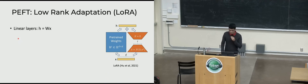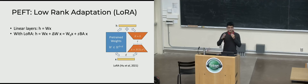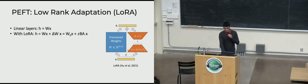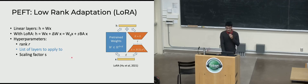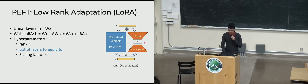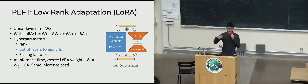LoRA's basic equations: instead of a typical linear layer, you add a parallel branch with a low-rank decomposition of the weight delta — two trainable matrices. The key knobs are the rank and the list of layers you apply this to. The most important factor turns out to be which layers you apply LoRA to, not the rank itself. A scaling factor is also present but doesn't do much in practice. At inference time, you can merge the weights by adding the delta to W, leaving the same network with the same inference cost.